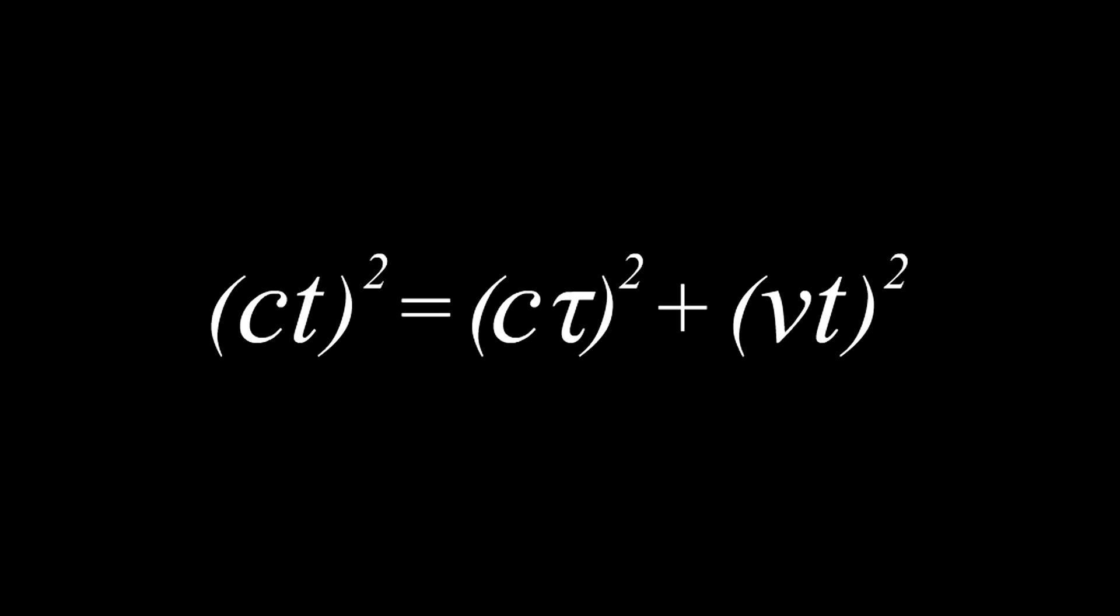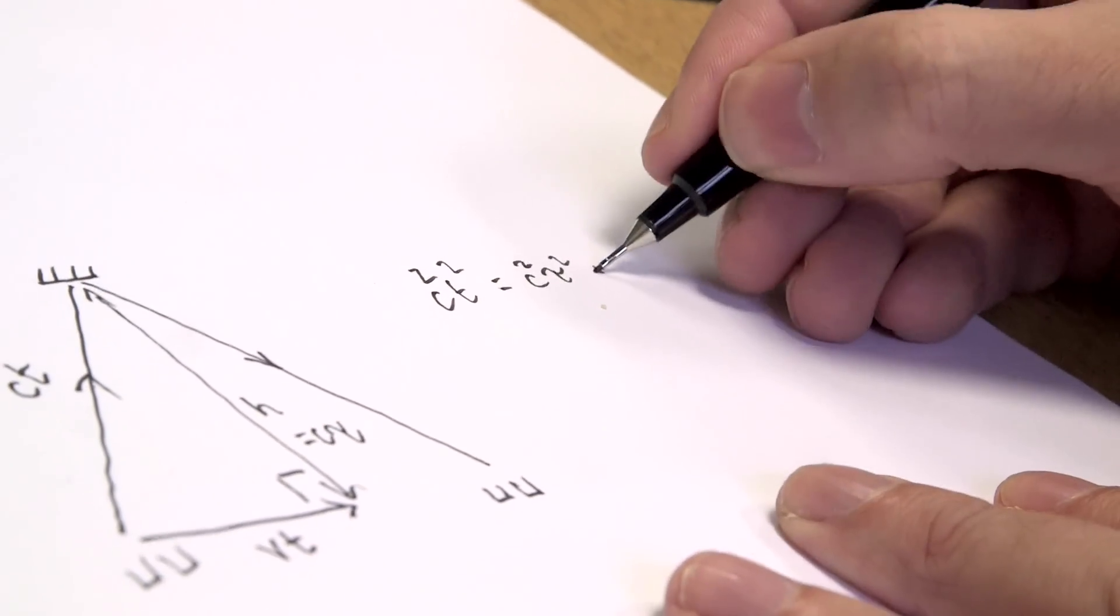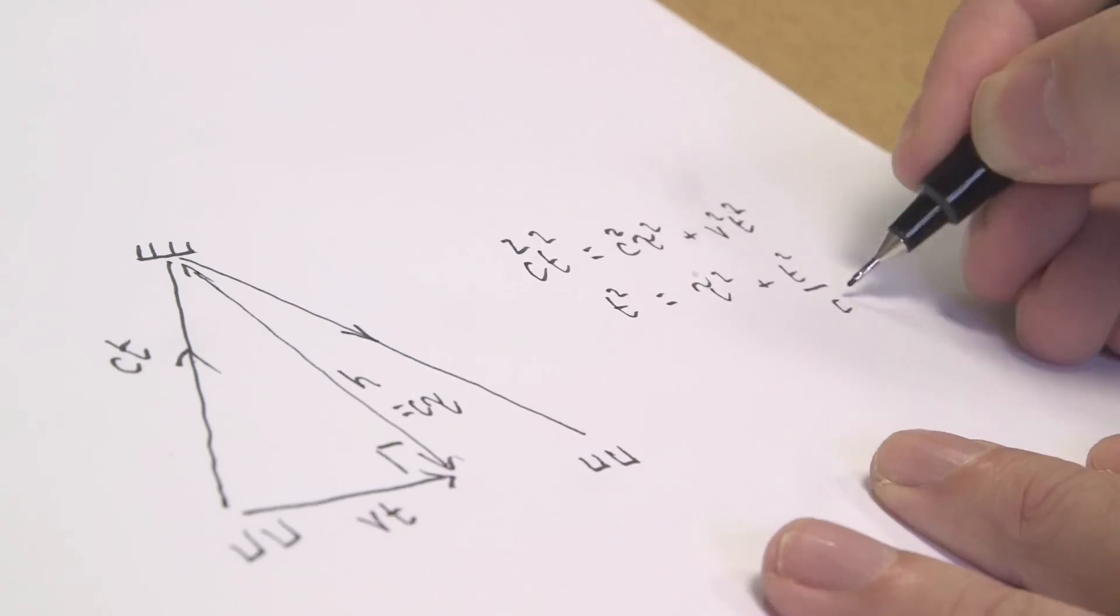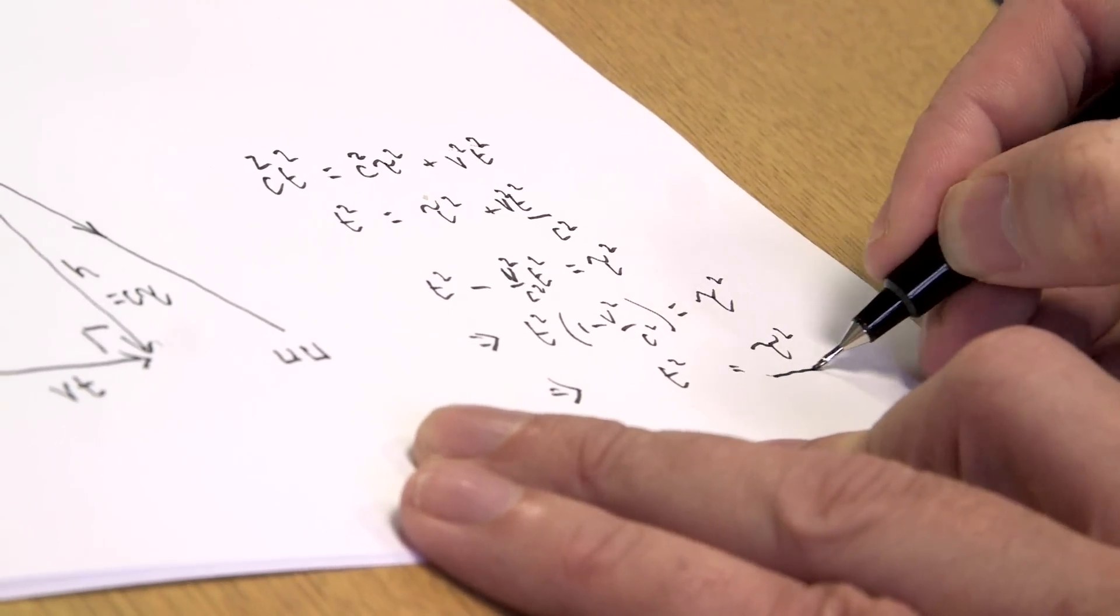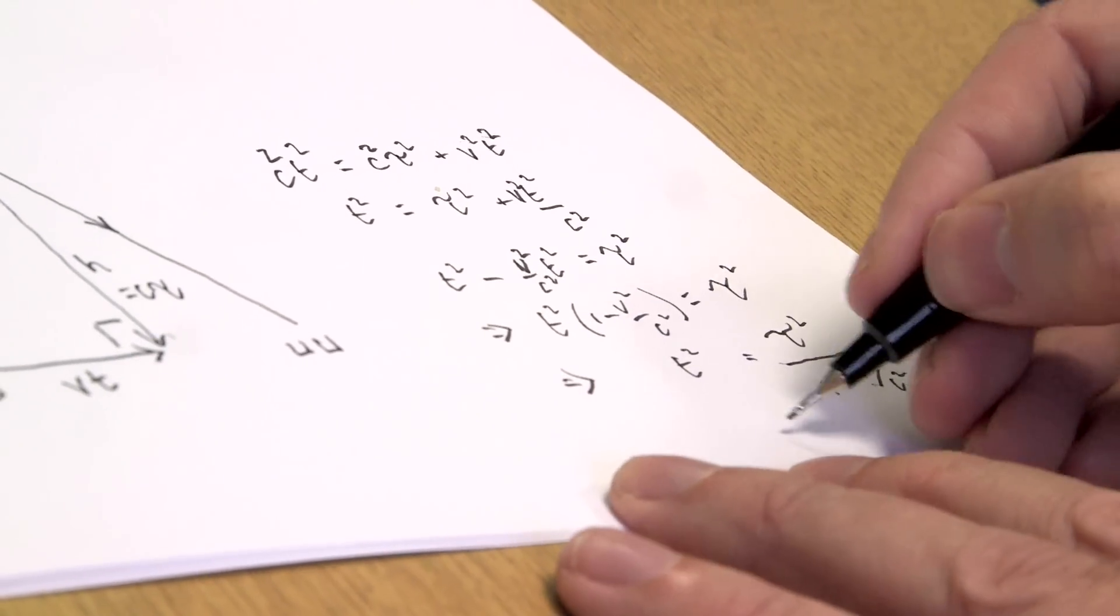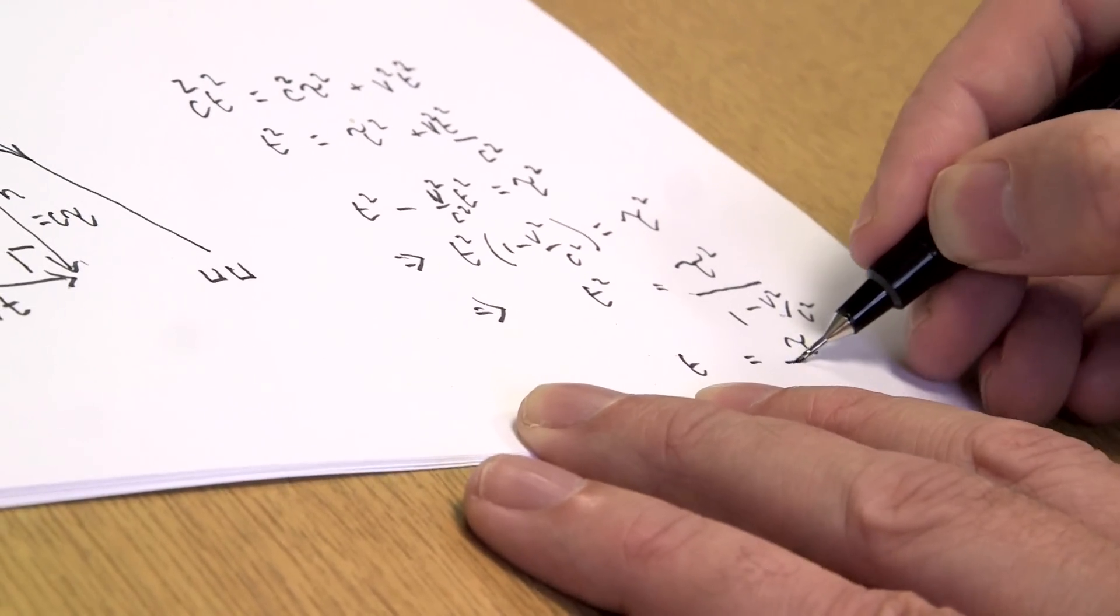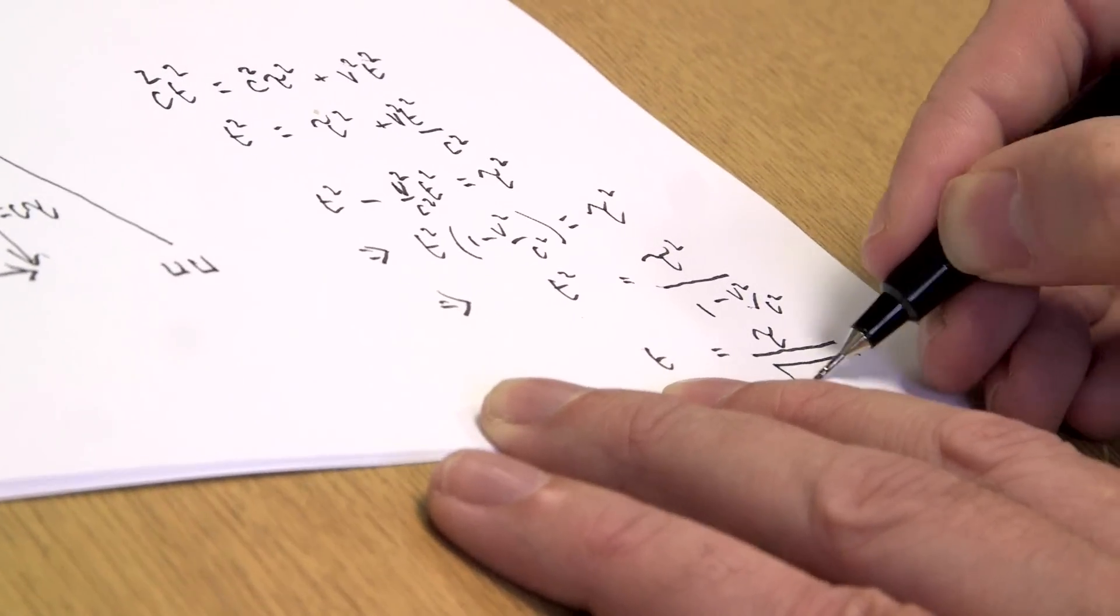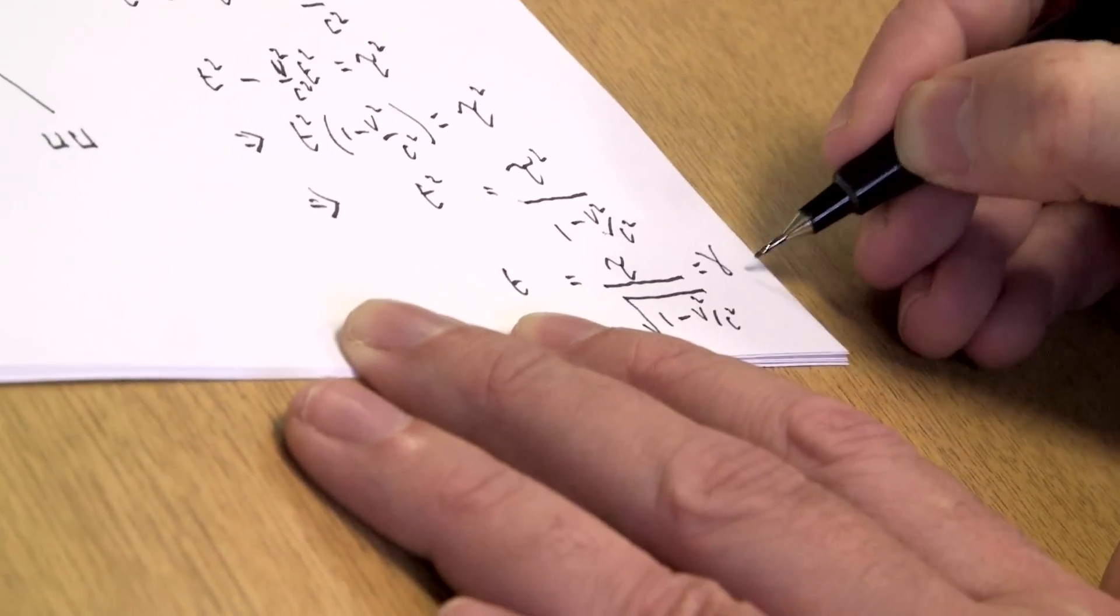This is just a right angle triangle we've got here. So we can apply Pythagoras's theorem which says that the hypotenuse squared is equal to the sum of the squares on the other two sides. So ct squared is equal to c tau squared plus vt squared. We've got c squared t squared equals c squared tau squared plus v squared t squared. Now I need to do a little bit of magic to rearrange this formula: t squared is equal to tau squared over 1 minus v squared over c squared. And then I just take the square root of both sides.